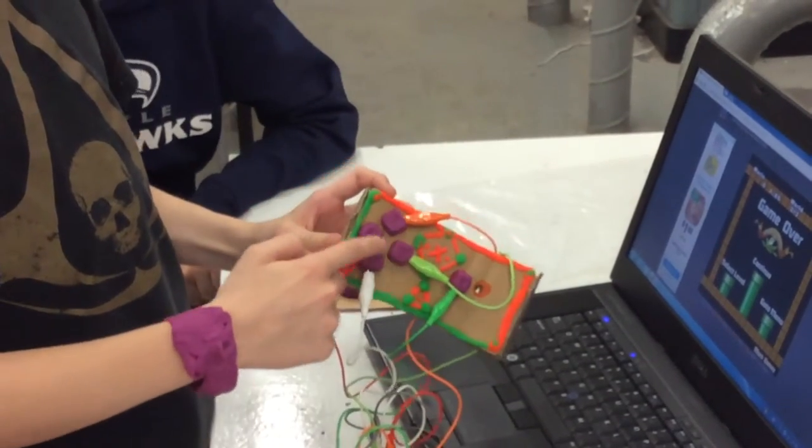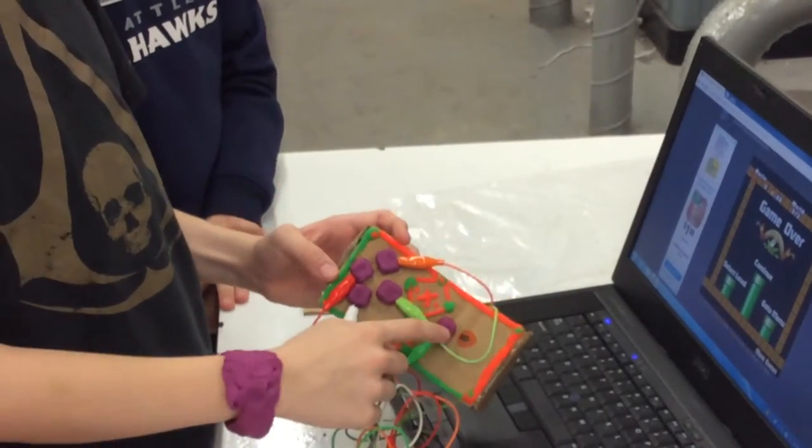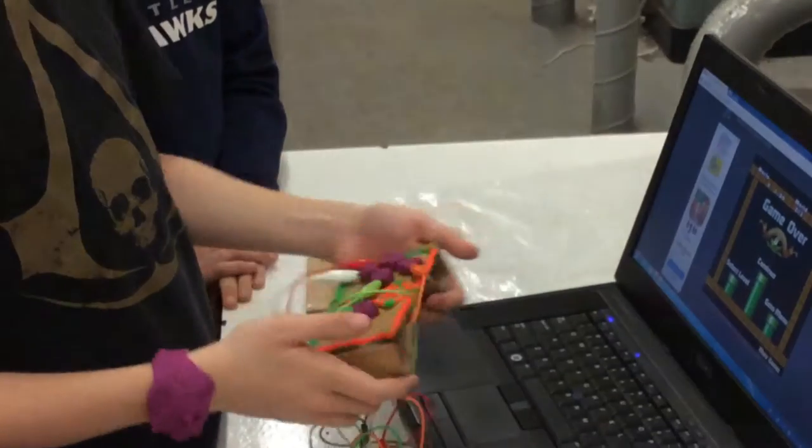So I added Play-Doh so it can press down, and then a fire button. So when you get a firepower, you can press that. And then I added these back things just for a grip.